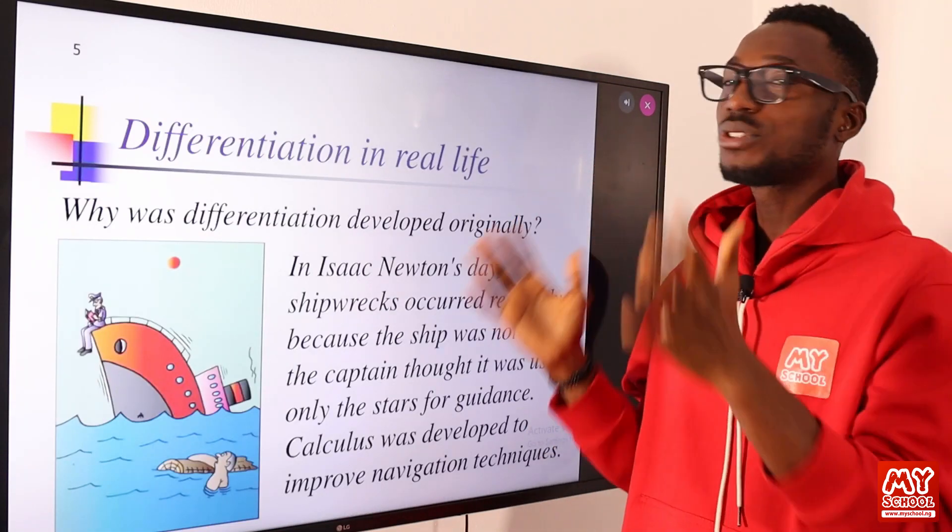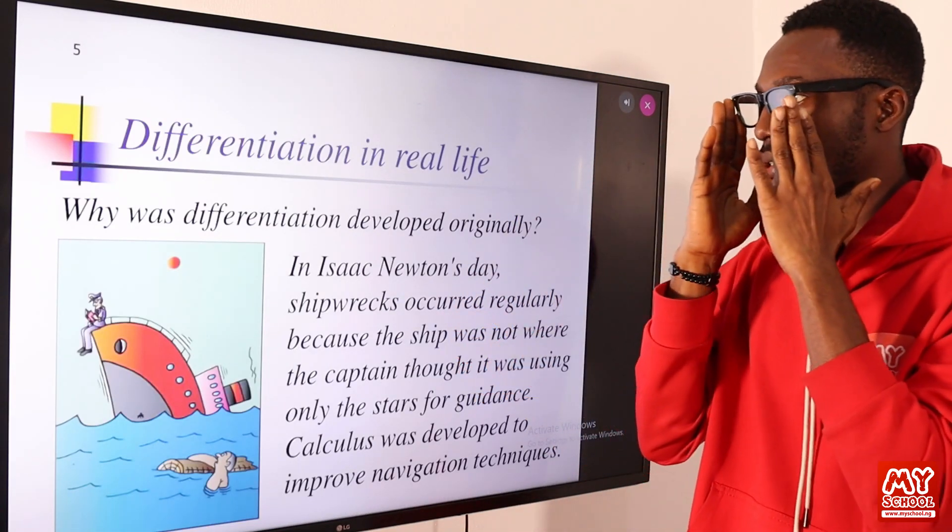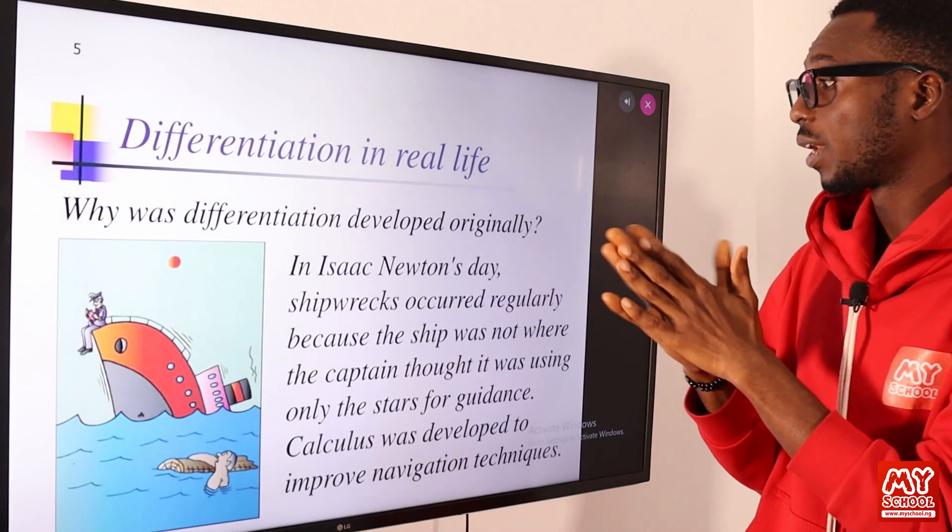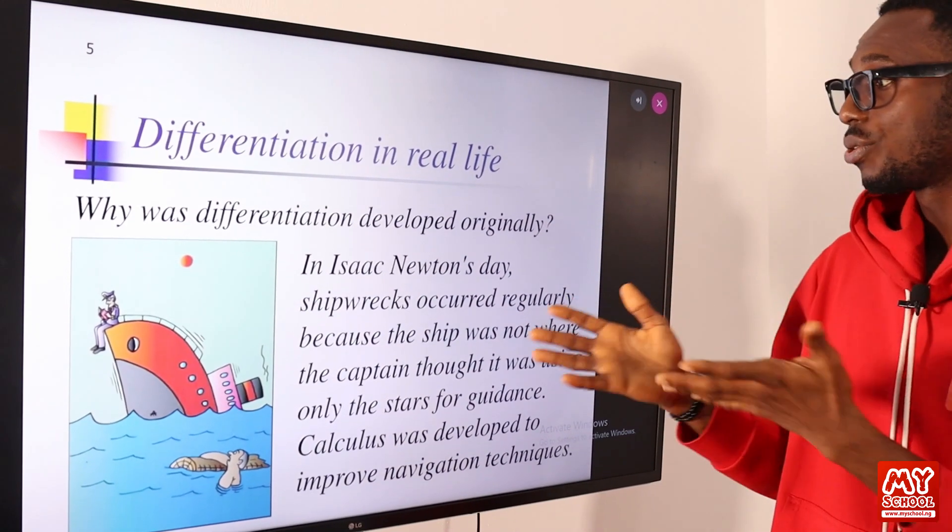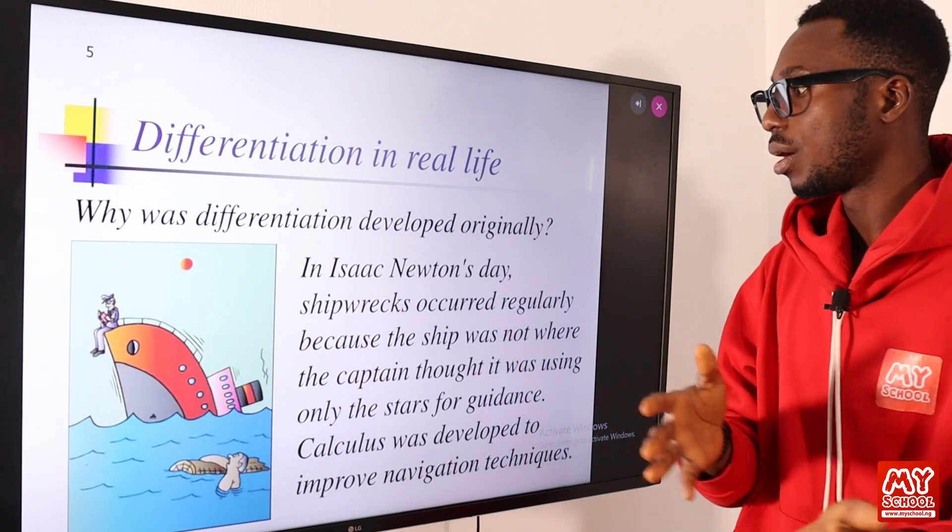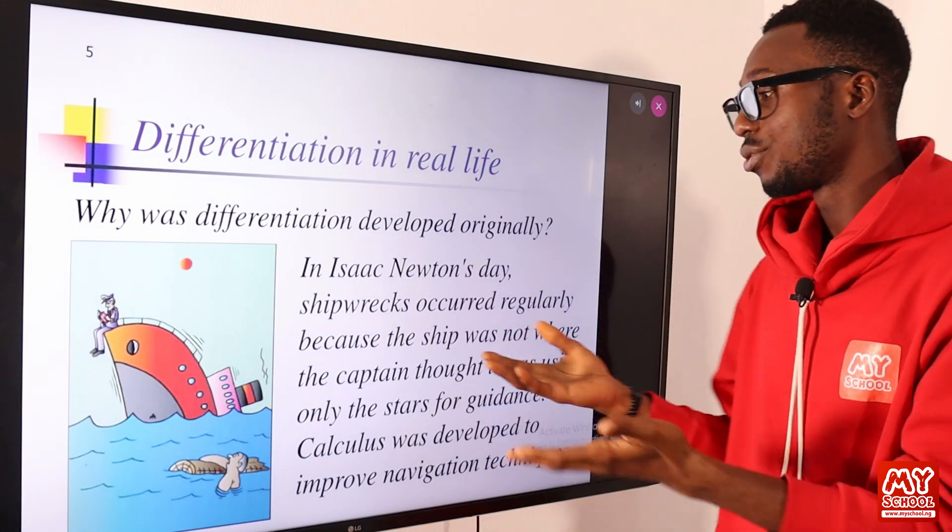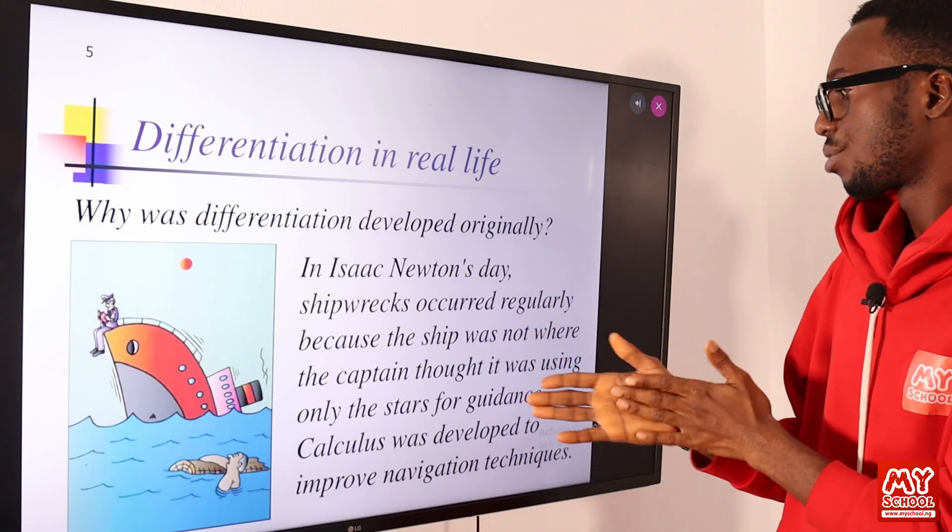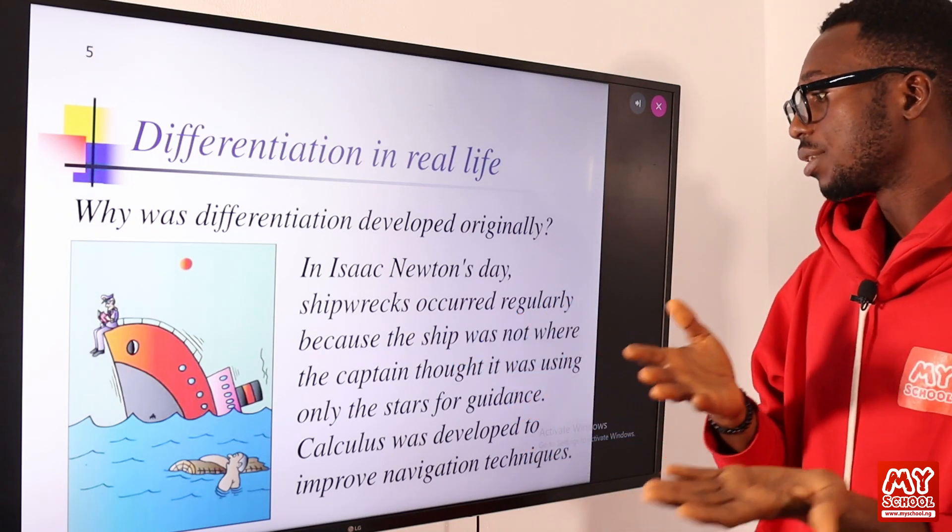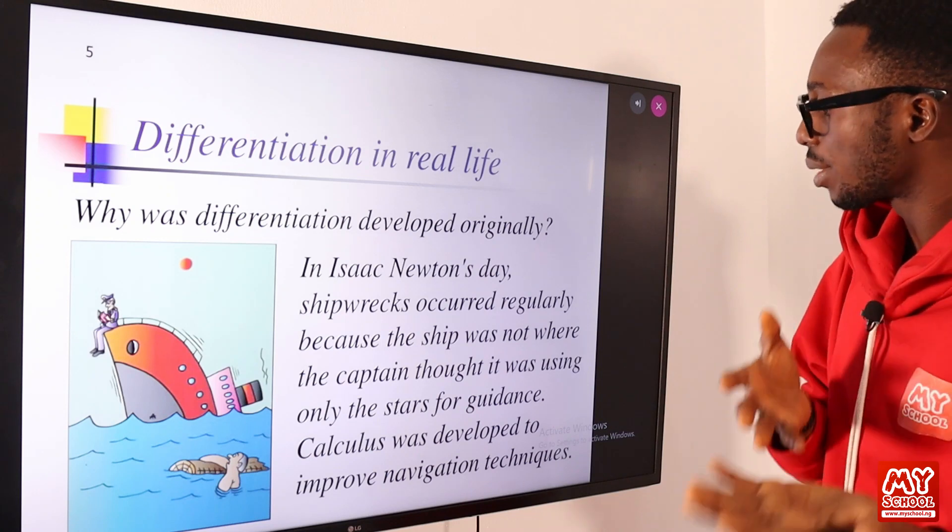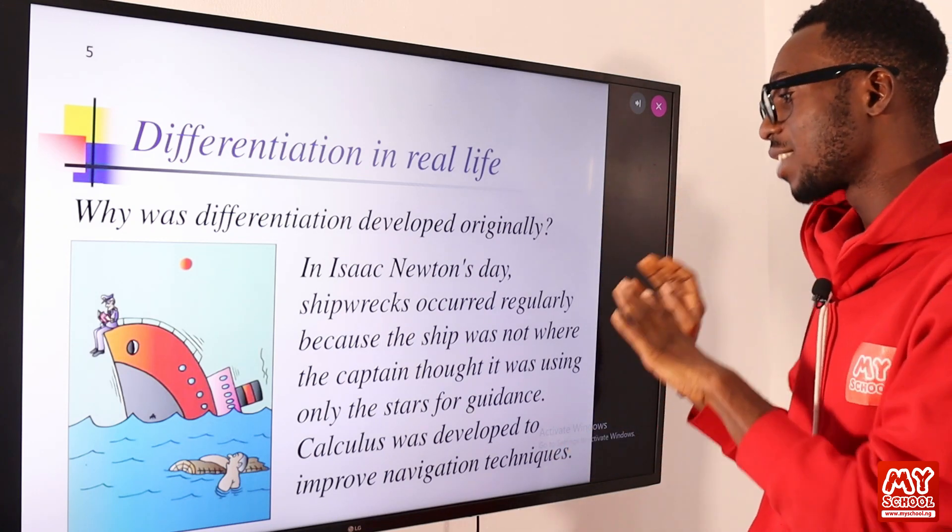How did we come about differentiation? Why was differentiation developed originally? In Isaac Newton's day, shipwrecks occurred so often due to some factors. Shipwrecks occurred regularly because the ship was not where the captain thought it was, using only the stars for guidance.